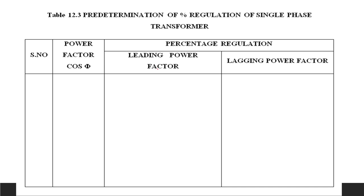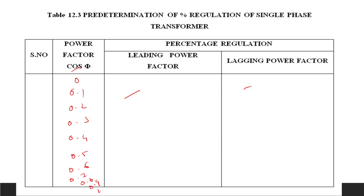Similarly, to predetermine the voltage regulation of the single-phase transformer, vary the power factor from 0 to 1. For different power factor values, calculate the regulation in terms of leading and lagging power factor using the respective formulas from the manual. By using those formulas you could calculate the regulation of the single-phase transformer.